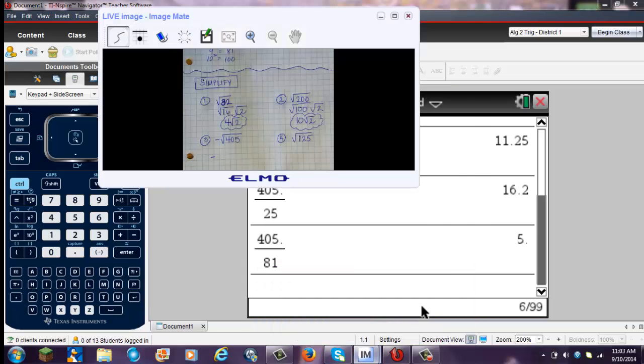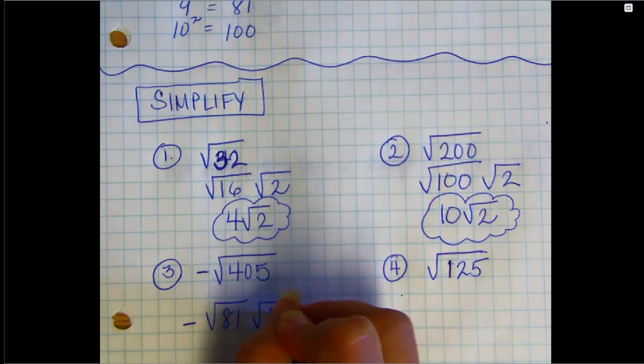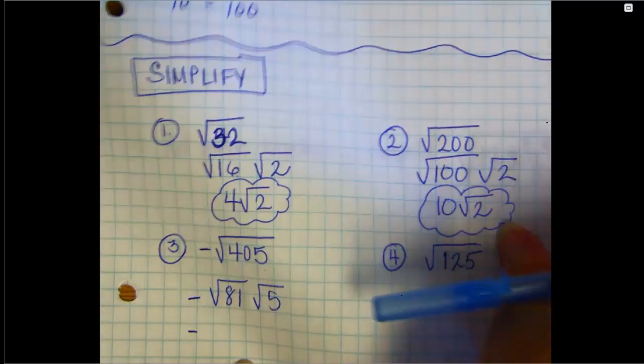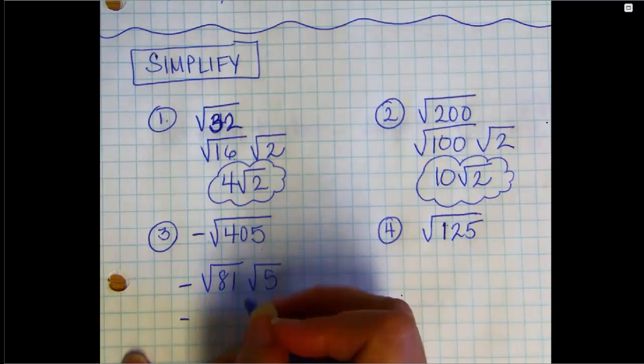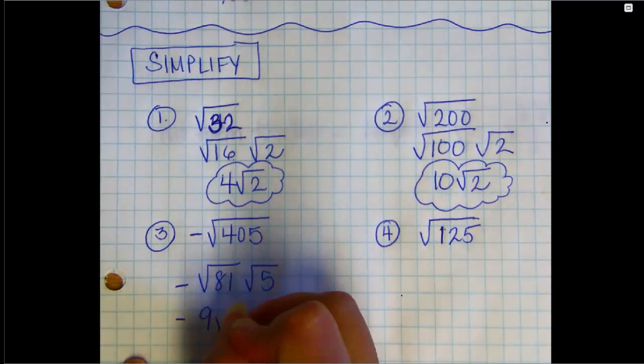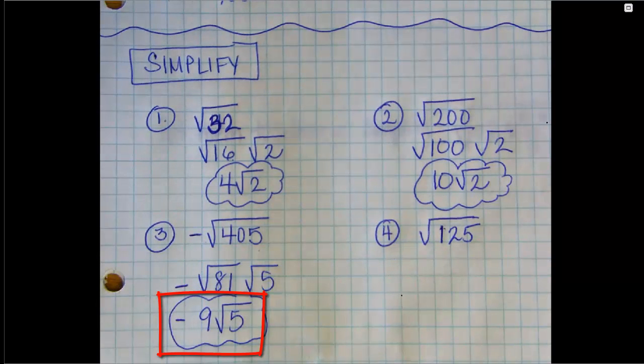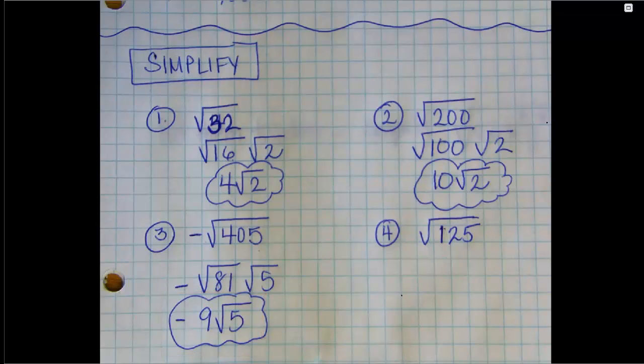81 times 5 is 405. So when you go back to your paper, 81 times 5. Leave your negative out front. The square root of 81 is 9. Leave the square root of 5 alone. So that was a nice example of sometimes just having to persevere and trial and error through that. One last problem is the square root of 125. Give that a try. Quickly pause the video, see what you get, and then come back and see if you got it.